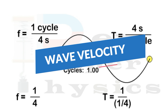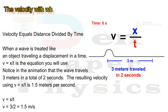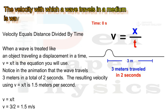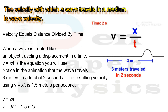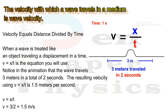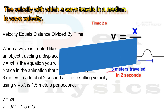Next we will learn about wave velocity. Wave velocity is the distance traveled by a wave in a medium in unit time. For example, if a wave travels a distance of 3 meters and takes 2 seconds to travel that distance, then the wave velocity is 3/2, which is 1.5 meters per second.